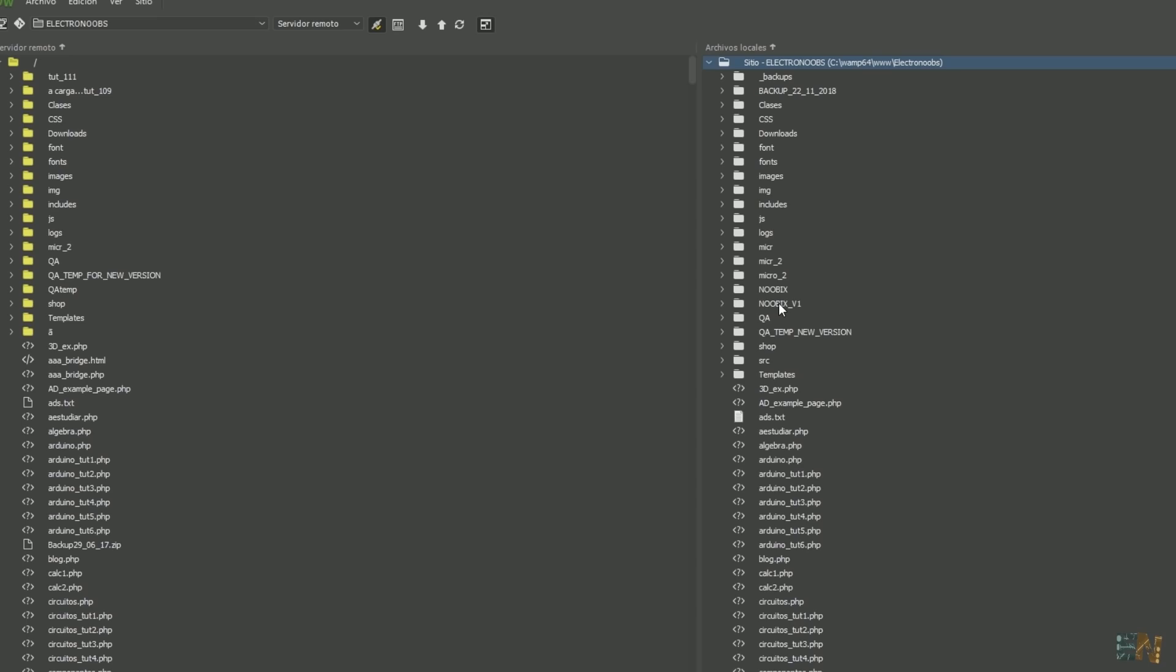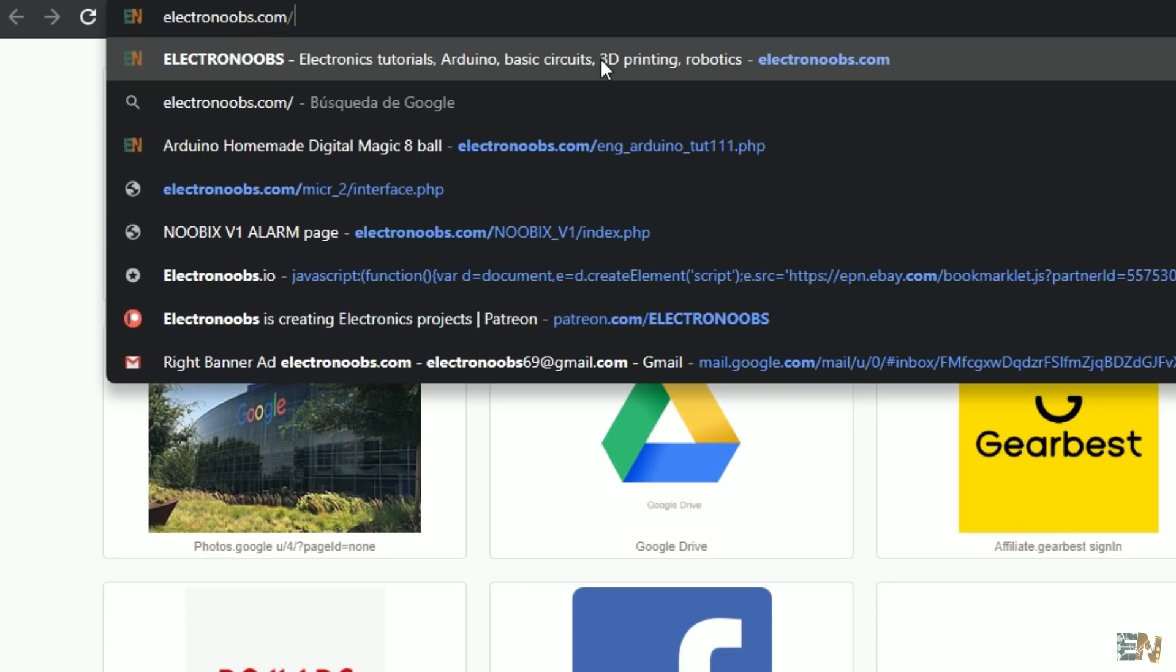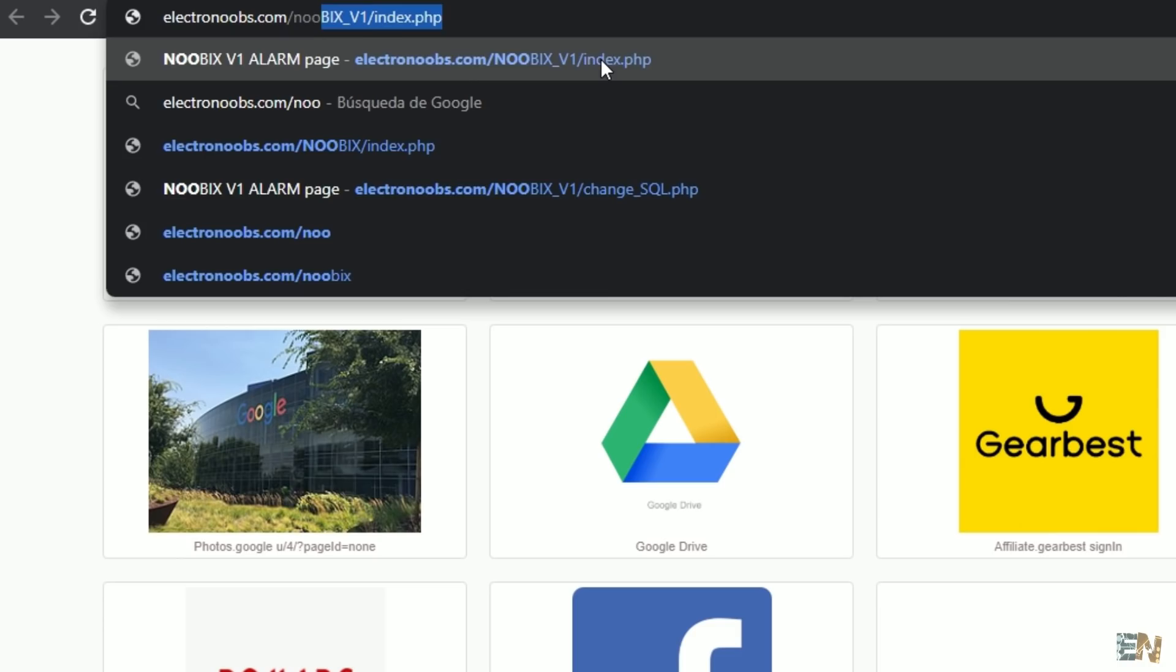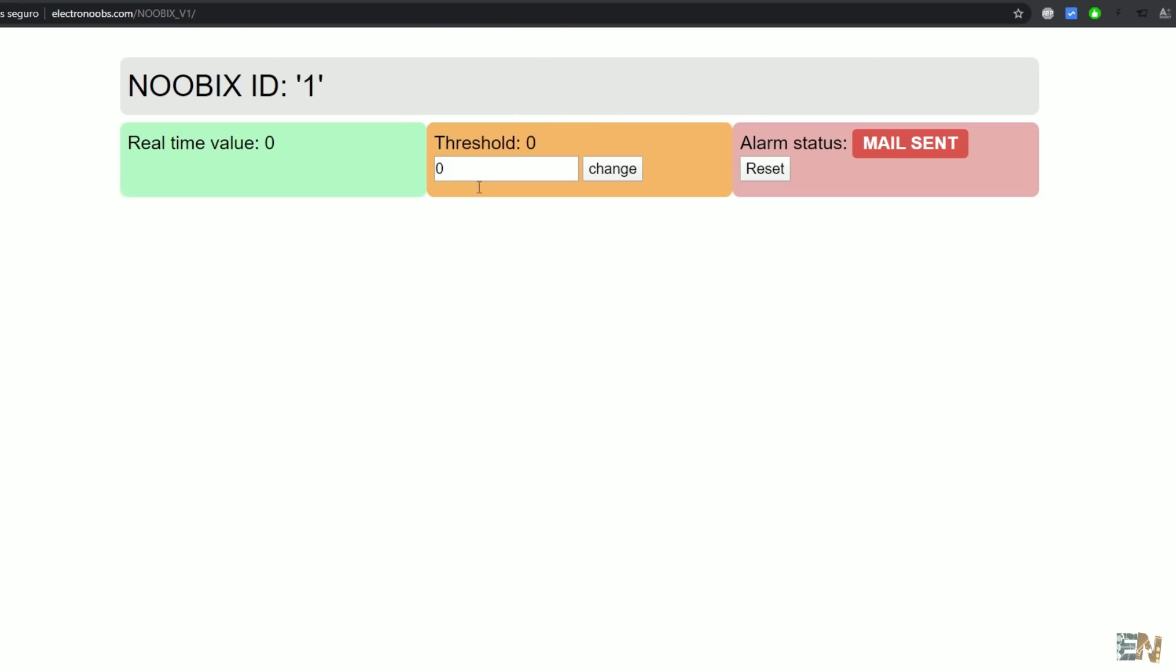Upload the entire Noobix V1 folder to your website directory. In my case to electronoobs.com. So now if I go to electronoobs.com/noobix-v1, I will get the interface. If you get a database error, check if the user, the server, or the password are okay in the PHP codes.